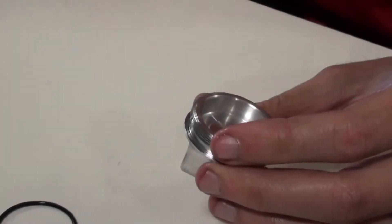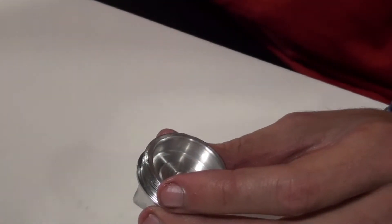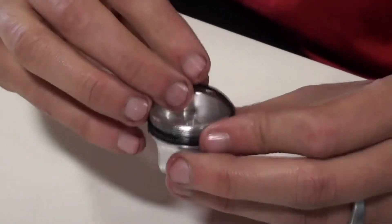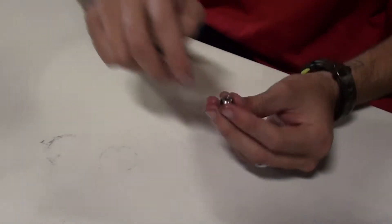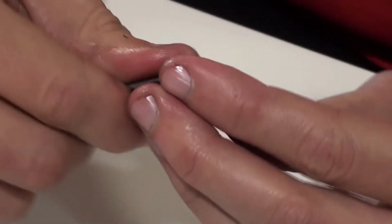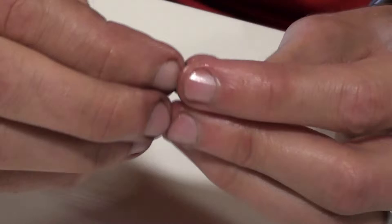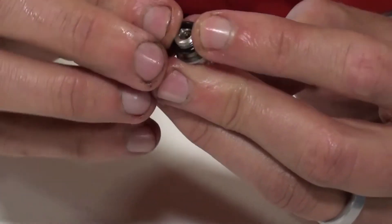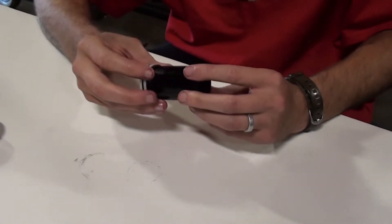Then you replace the eyelet seal, and the seal on your Schrader valve. And you're ready to start reassembling your shock.